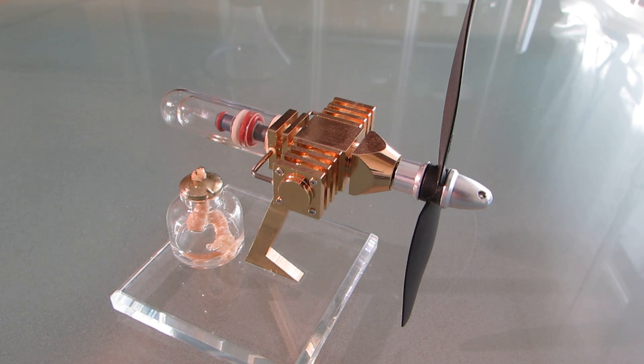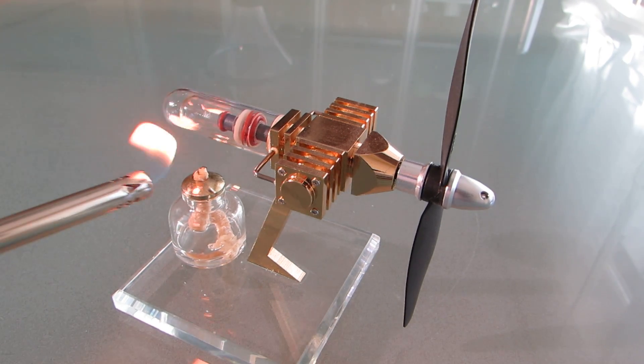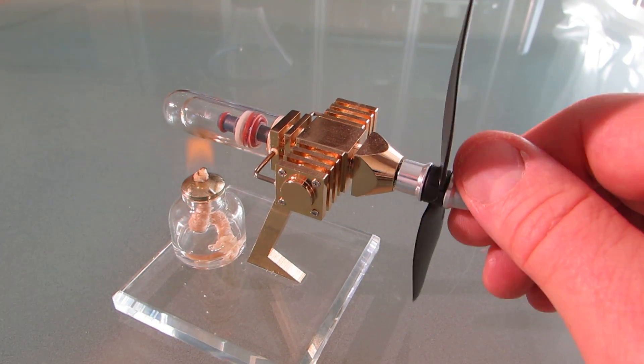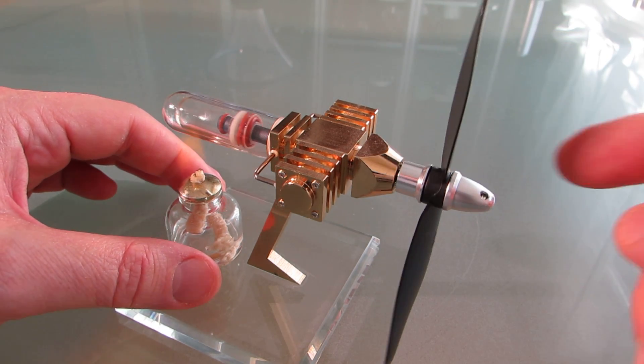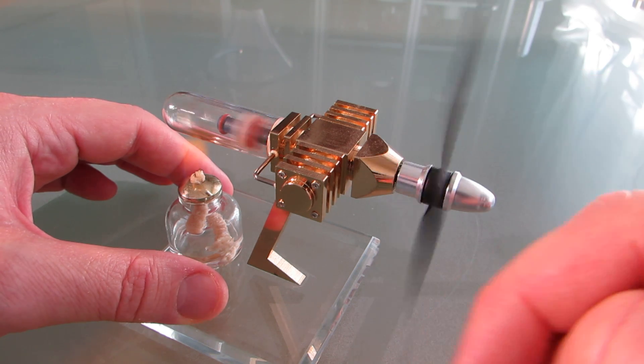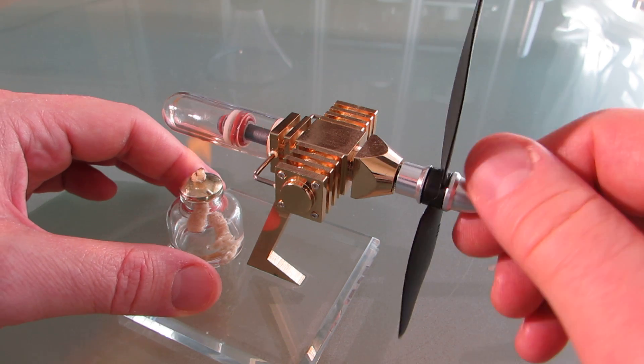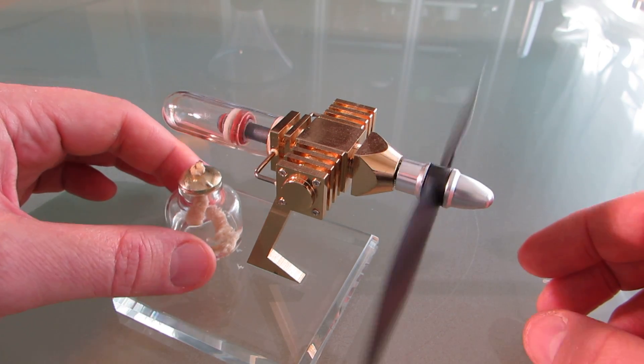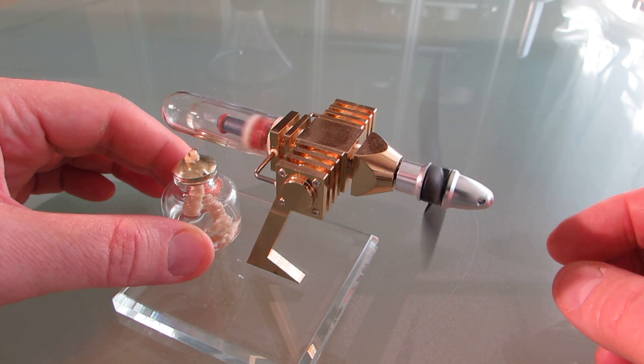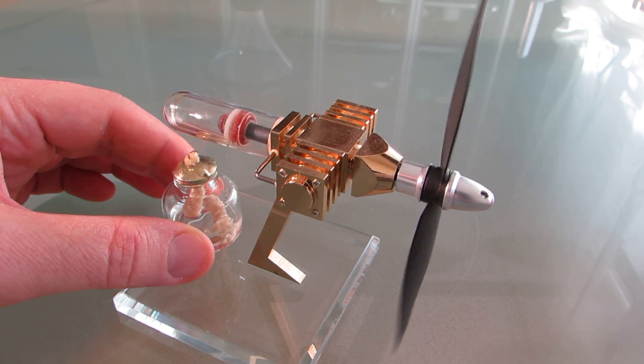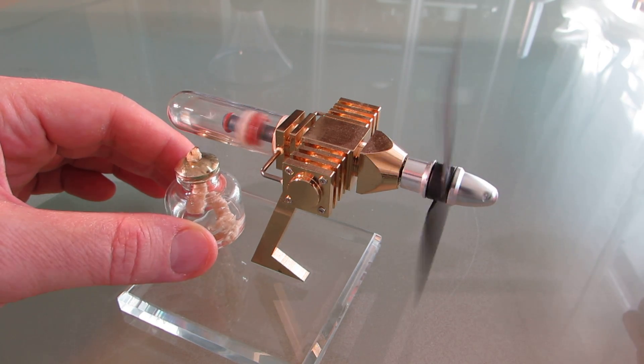Hi, this is a Ringbomb Stirling engine with a prop on it. The prop is only used as a flywheel. It could never be used as a model engine, for example. The problem with Stirling engines is that the power-to-weight ratio is way too small to be useful in a plane.